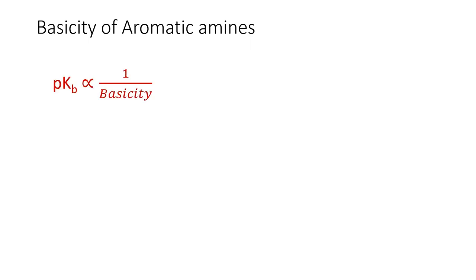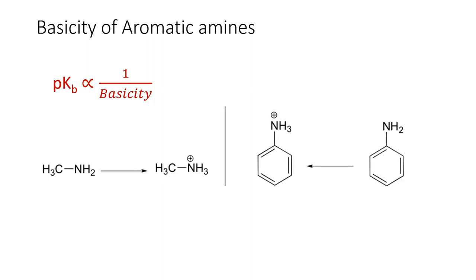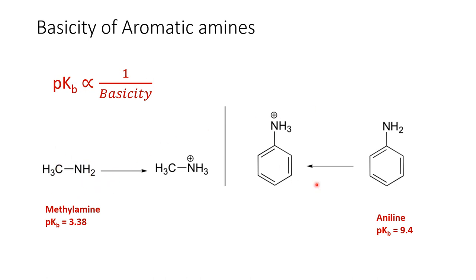Let us see the basicity of aromatic amines. Basicity is inversely proportional to pKb value. Comparing the aliphatic amine methylamine and the aromatic amine aniline, we see methylamine has a lower pKb value than aniline, making it very clear that aliphatic amines are more basic than aromatic amines.